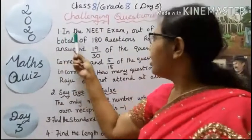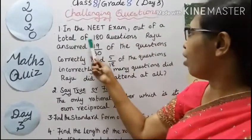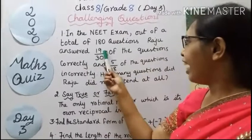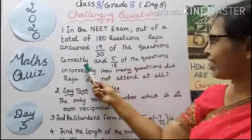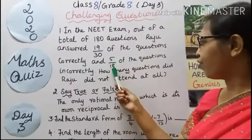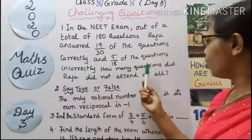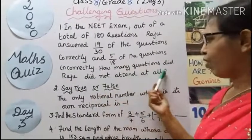First question, in the NEET exam, out of a total of 190 questions, Raju answered 19 out of 30 of the questions correctly and 5 out of 18 of the questions incorrectly. How many questions did Raju not attempt at all?